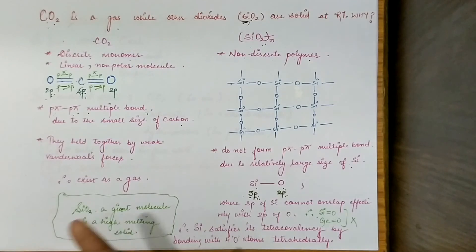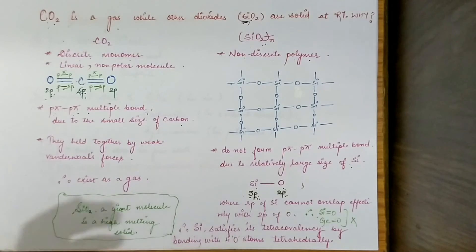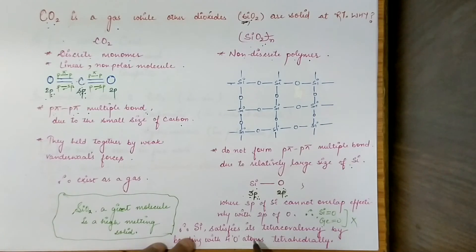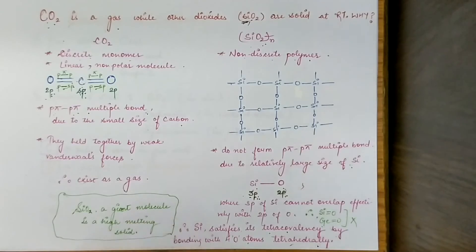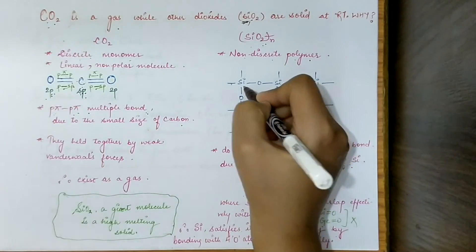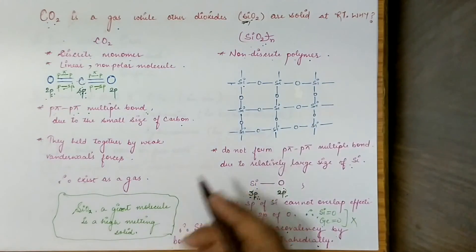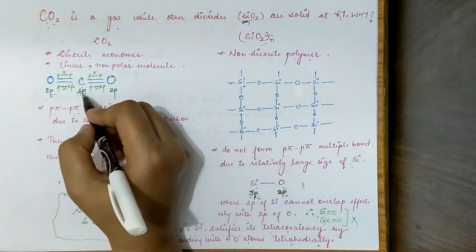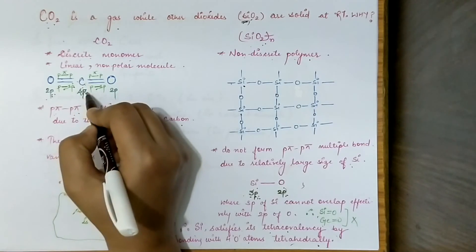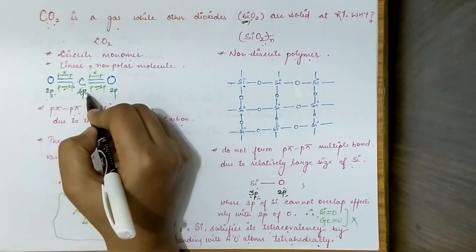To satisfy its tetravalency, silicon gets polymerized. Its size is increased and its overlapping is poor, so what does it do? Just to satisfy its tetravalency, silicon bonds with 4 oxygen atoms tetrahedrally. If you look for the hybridization of the silicon atom, you will find it is sp³ hybridized. The carbon in CO₂, by contrast, is sp hybridized.